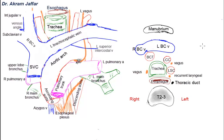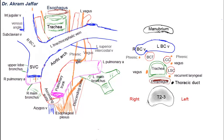Now let's deal with the phrenic nerves. Each phrenic nerve is a branch of the cervical plexus. It descends from the neck and enters the thorax posterior to the brachiocephalic veins — here are the left and right phrenic nerves. The left phrenic nerve crosses the left surface of the arch of the aorta in front of the vagus and passes superficial to the left superior intercostal vein. Unlike the vagus, both the right and left phrenic nerves pass in front of the root of the lungs. Over the arch of the aorta, the phrenic nerve is in front of the vagus, and between them passes the left superior intercostal vein.